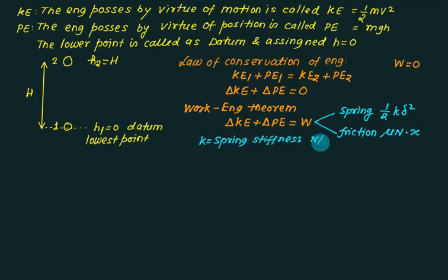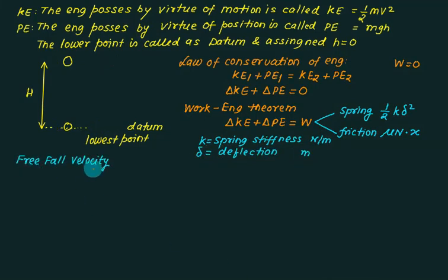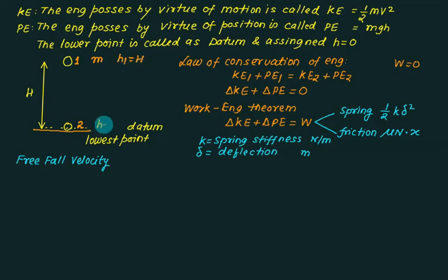To develop the equation for free-fall velocity, consider a ball at position one — the ground level — and position two. The ball has mass m and is dropped from height h1 equal to capital H. At position two, h2 equals zero. Initially, kinetic energy is zero and potential energy is mgh. As it falls toward gravity, when it reaches the ground, potential energy becomes zero and it acquires kinetic energy.